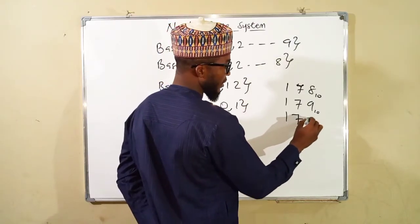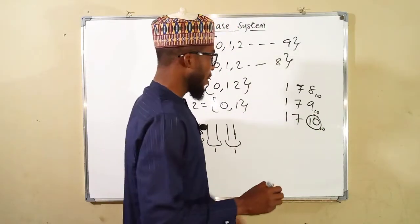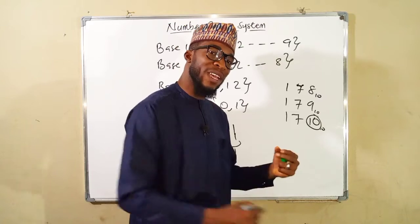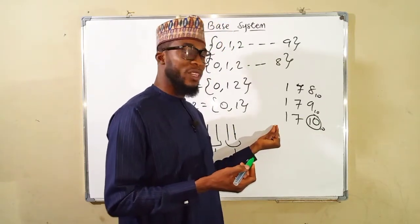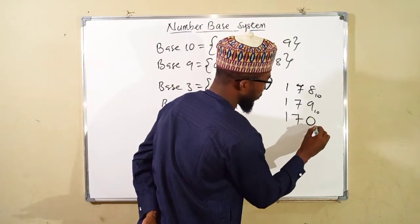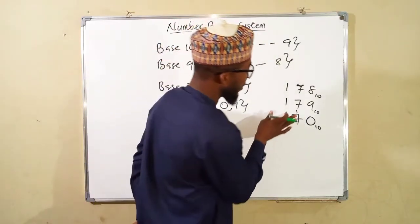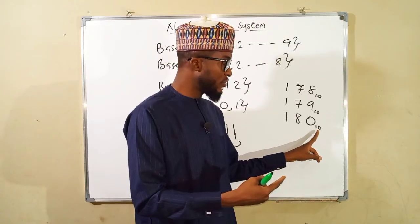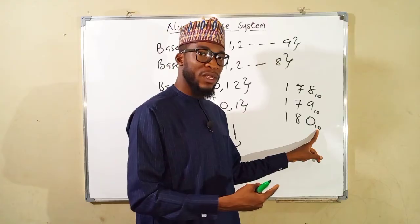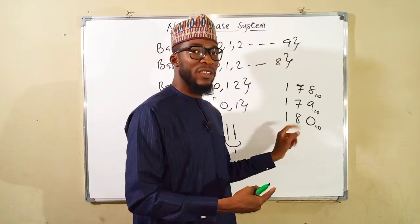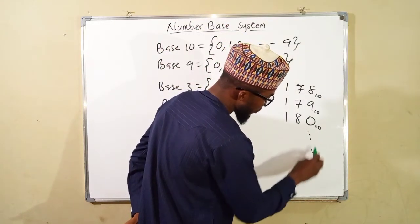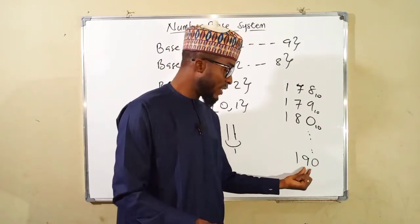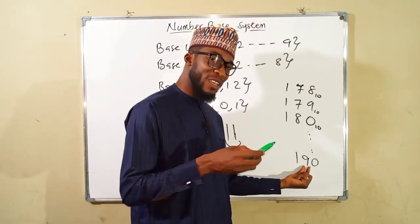The next number after 179 would be 1, 7, 10 in base 10. But remember, the highest digit in any number is 1 less than the base itself. So 10 is a complete bundle — you recount from 0 and carry that bundle to the next digit. Instead of 10, you write 0 and carry the bundle to make the next digit 8. Units keep increasing until reaching the base, completing a bundle that carries to the next position — this is how counting works.